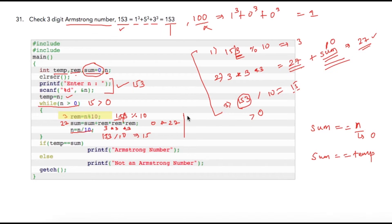We will find new remainder as 5 because 15 modulus 10 will give us 5. In the next statement we are adding 27, which was my previous value, plus 5 multiplied by 5 multiplied by 5. This will give me 152. In the next statement we are getting away with 5, so 15 divided by 10 will give me only 1.